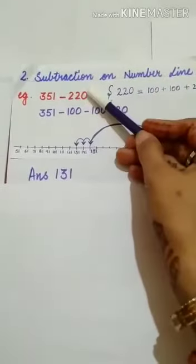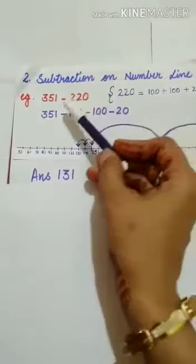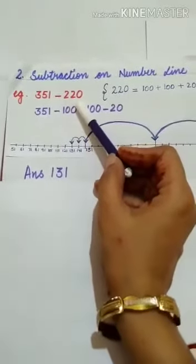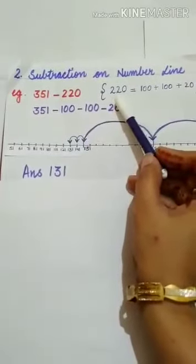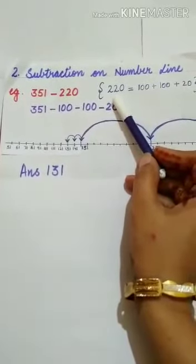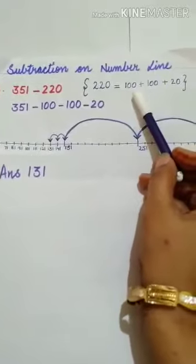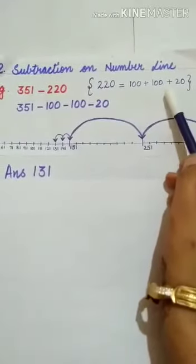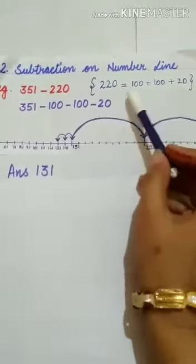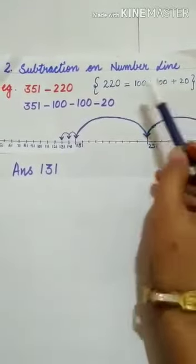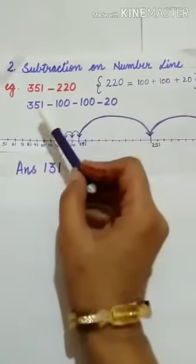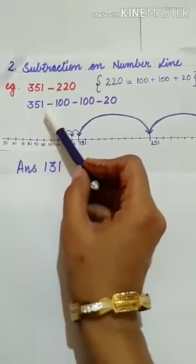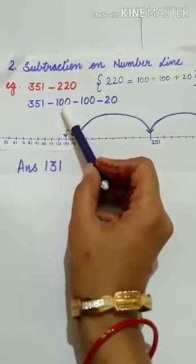Now our second strategy is subtraction on number line. The question is 351 minus 220. First of all split 220, so I have written here 100 plus 100 plus 20. It means I have split 220 in hundreds and tens terms.